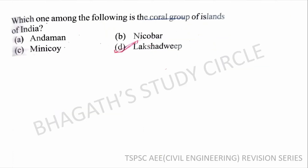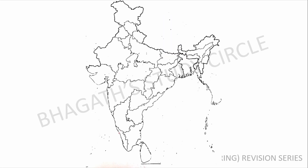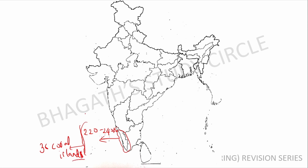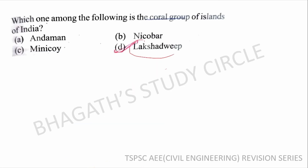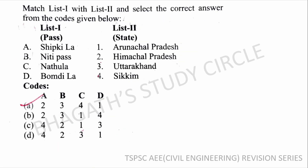First question: Which one of the following is the coral group of islands of India? The answer is Lakshadweep. It has 36 coral islands located 222 to 240 kilometers from Kerala. So option D is the correct answer.